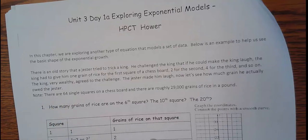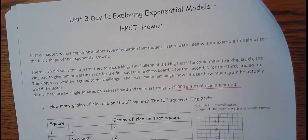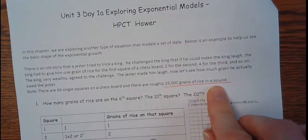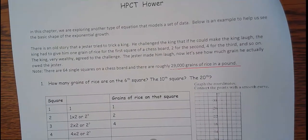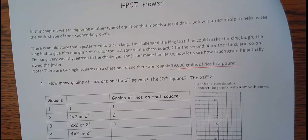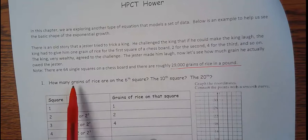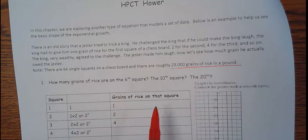Now we got to see how much grain does the king owe to the jester. Just to note, there are 64 single squares on a chessboard and there are roughly 29,000 grains of rice in a pound of rice, which I thought is extraordinary. So how many grains of rice would be in the sixth square or the tenth square or the twentieth square, and we want to predict that.